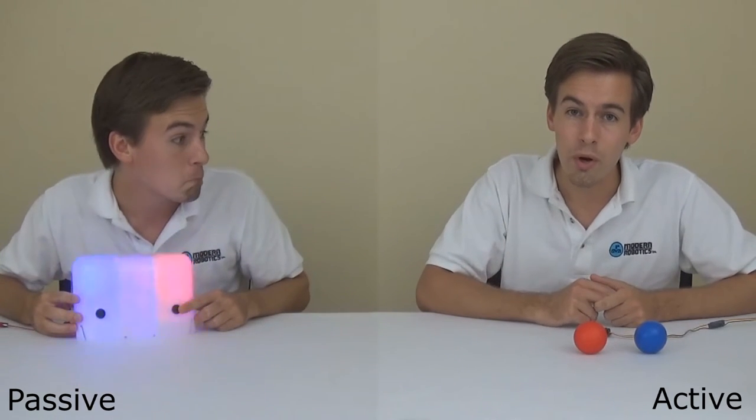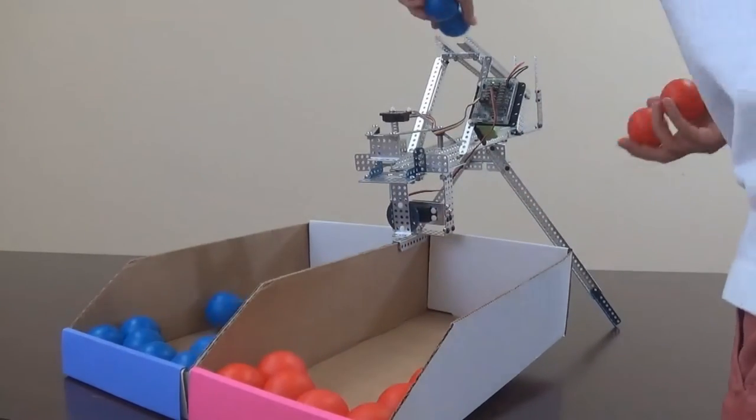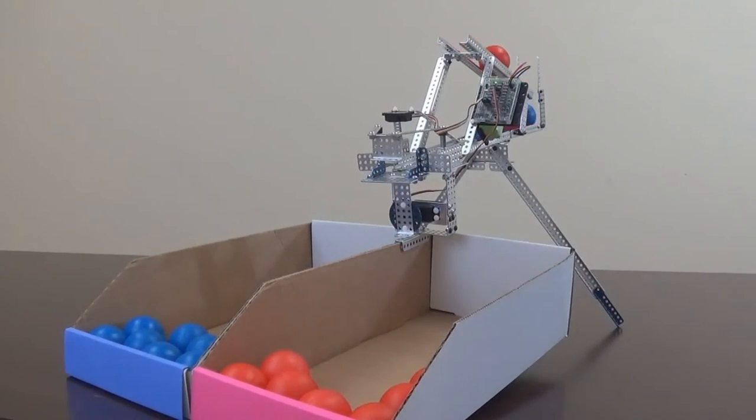Passive mode is great for detecting the color of lighting like from the lights on the ceiling or from flashlights or from things like the FTC rescue beacon. We made a ball sorter to show active mode. This ball sorter is using a color sensor to detect the color of each ball and then moving the servo accordingly.